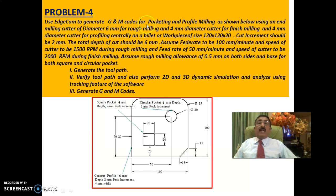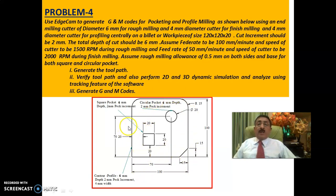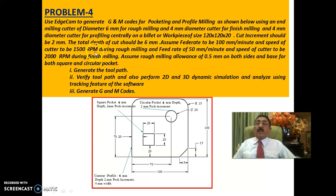Use EdgeCAM to generate G and M codes for pocketing and profile milling using an end milling cutter of diameter 6mm for rough milling, and 4mm diameter cutter for finish milling and profiling, on a billet of 120 by 120 by 20mm. Cut increments should be 2mm, total depth of cut 6mm, feed rate 100mm/min and speed 1500 rpm for rough milling, and feed rate 50mm/min and speed 2000 rpm for finish milling.